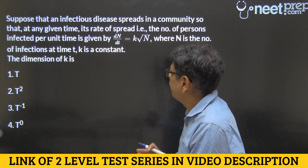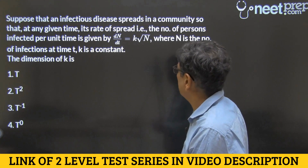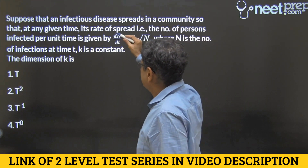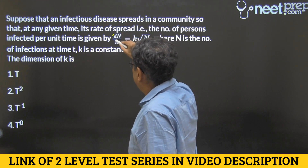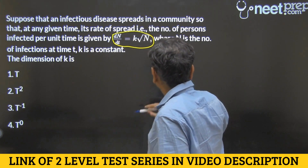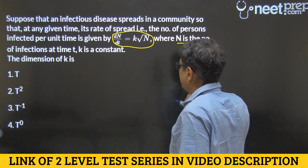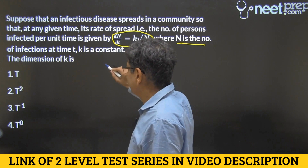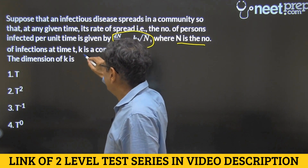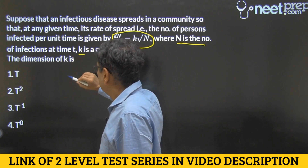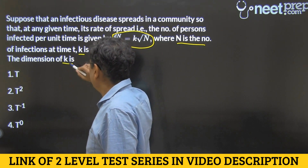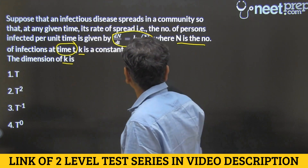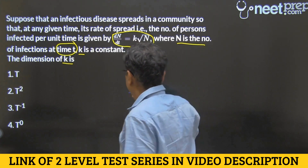Suppose that an infectious disease spreads in a community. We have been given this equation and are asked to find the dimension of K. Note that n is a number and therefore has no dimensions. T is time. So what is the dimension of K?